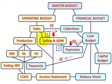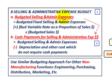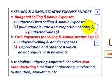Now let's look at what would be included in the selling and administrative expense budget. First, we determine the budgeted selling and administrative expenses. That equals the budgeted fixed selling and administrative expenses, plus the budgeted variable rate — expressed as a proportion of sales — times the budgeted sales dollars.